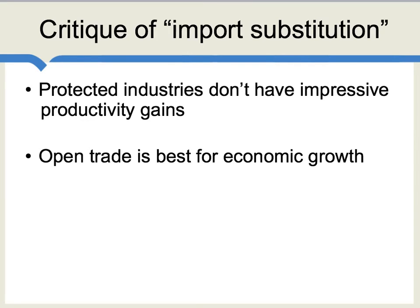Kruger also did important work on tariffs and the idea of import substitution. Import substitution is when a developing economy imposes tariffs on foreign goods, hoping that its domestic producers will arise as substitutes and that those industries will grow, creating jobs. This is sometimes called the infant industry argument for tariffs — see the unit on trade policy for more on this idea. Kruger looked at data from several Asian countries and from Turkey, and found that in developing economies, protected industries did not, in general, have impressive or above-average productivity gains. She also found that open trade in developing economies was good for productivity gains and best for economic growth.